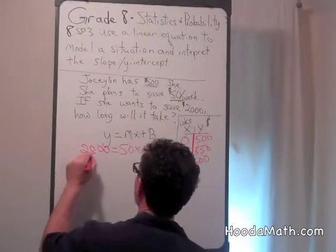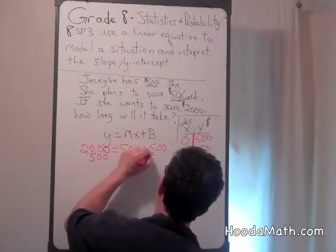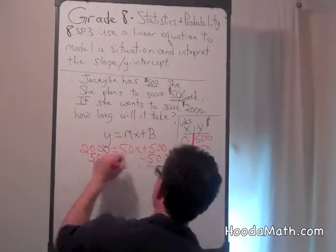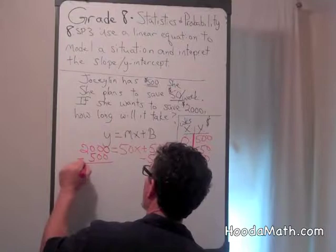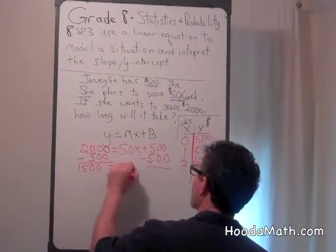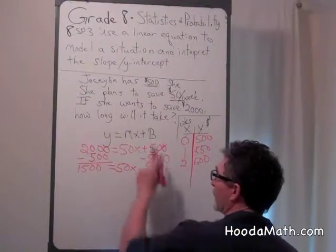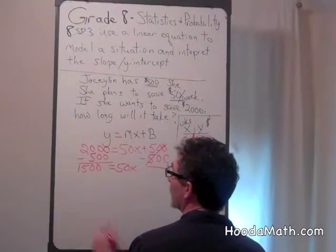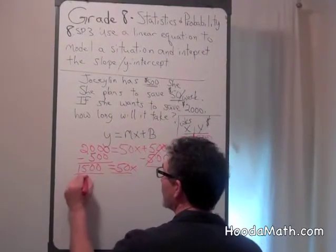Subtract $500 from both sides. And you get $1,500 equals $50x. This goes out. $500 minus $500 is $0. Divide both sides by $50.